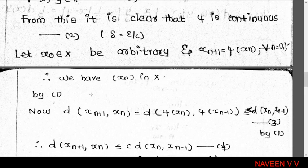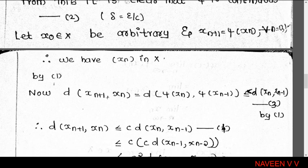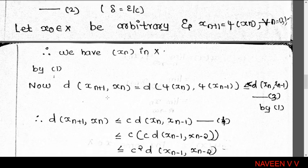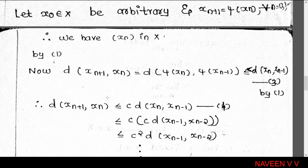Since φ is uniformly continuous, it is continuous. Now define a sequence {x_n} in X as follows: since φ maps X into X, and x_0 is a member of X, the sequence x_n is a sequence in X.